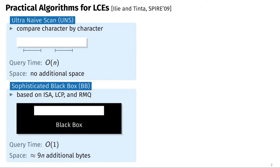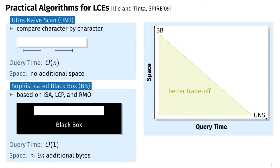There is no additional space required since no data structure is needed for the naive approach. The second approach, which we call the sophisticated black box, is based on the inverse suffix array, longest common prefix array, and range minimum queries. This black box can answer LCE queries in constant time. However, the data structures required are very large — around nine times the input size — so large that it is not useful in practice. This led to the common belief that the naive scan is the only feasible solution to answer LCE queries in practice.